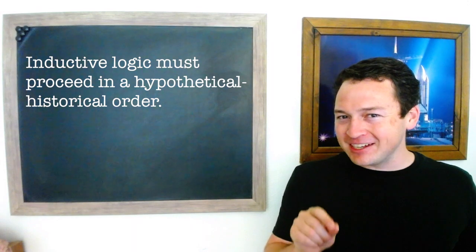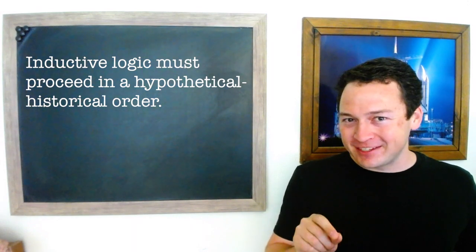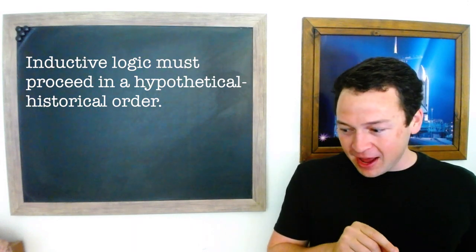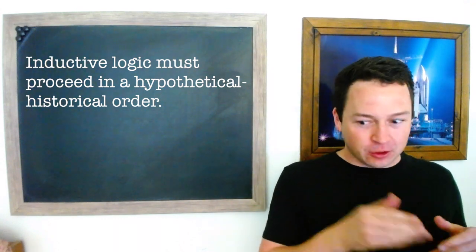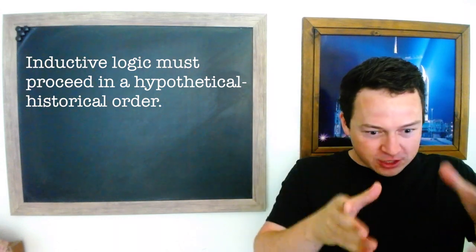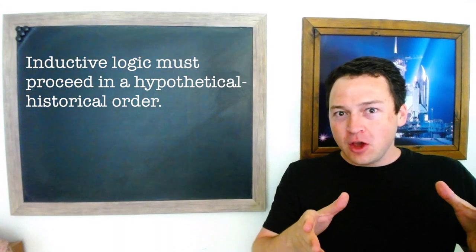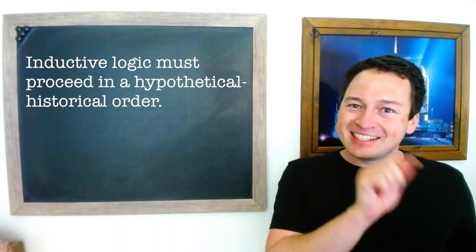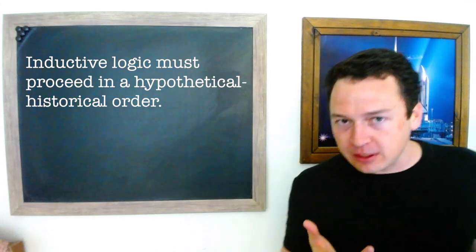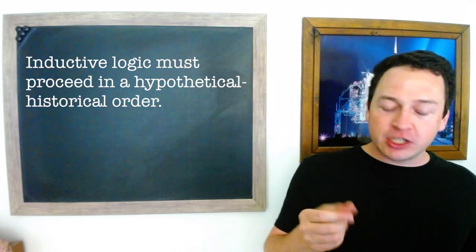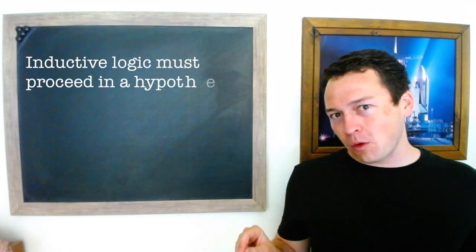Because mankind has already figured this out once. We've already derived, we've already gone in the proper order once, being able to use our current knowledge to understand new observations. We just have to reconstruct the exact connections, or not necessarily the exact connections, but the connections that could have happened in a historical order.